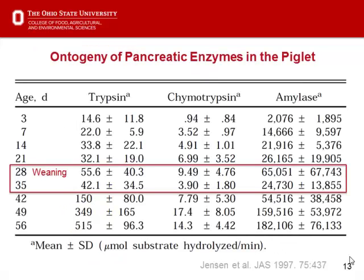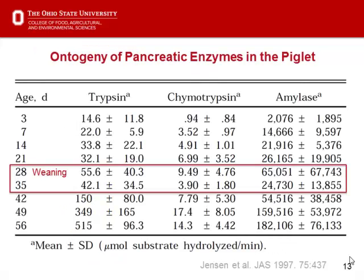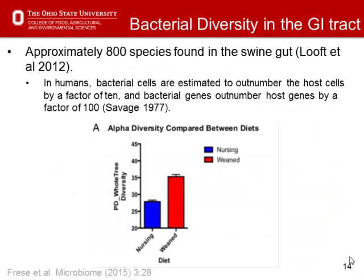Looking at protein digestion enzymes — trypsin and chymotrypsin — in animals weaned at 28 days of age, one week following weaning there was still a significant depression in the ability of those animals to utilize nutrients in the diet. Regarding bacterial diversity, there are about 800 species of bacteria in the swine gut — about 200 less than in humans. In humans, bacterial cells are estimated to outnumber host cells, indicating a lot of bacteria available.